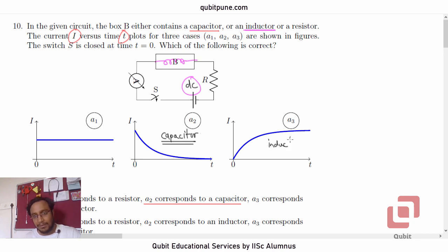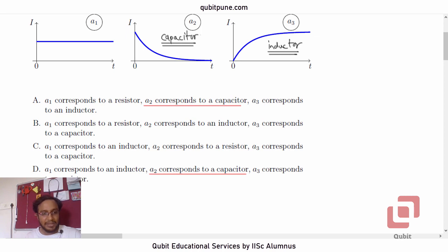Current initially increases and then becomes stable. So, A3 is inductor and that is option A.